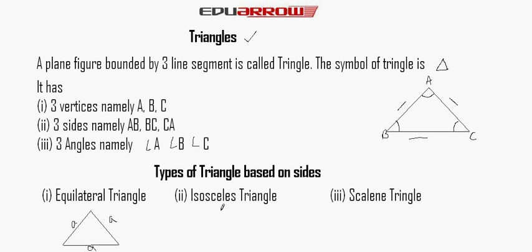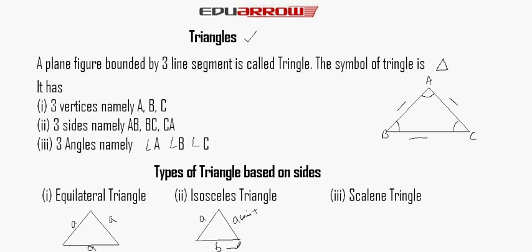Isosceles triangle. A triangle whose two sides are equal is called the isosceles triangle. One side is A units — it may be centimeters, meters, or anything. And the other side is B centimeters.